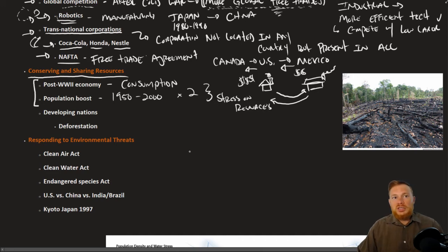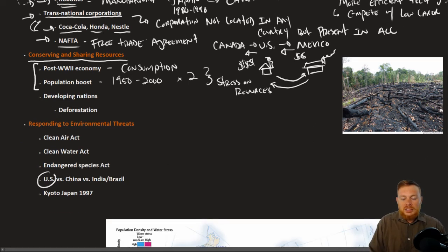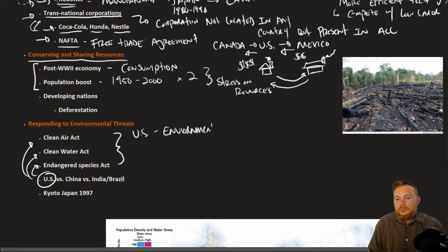Now, for industrial nations, a lot of the environmental damage has kind of already been done. So for the most part, when you look at a nation like the United States, the United States is passing or has passed environmental legislation, Clean Air Act, Clean Water Act, Endangered Species Act. For the most part, in developed nations like the United States, things like smog are declining. Generally speaking, there has been environmental progress.